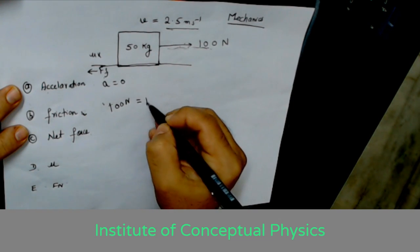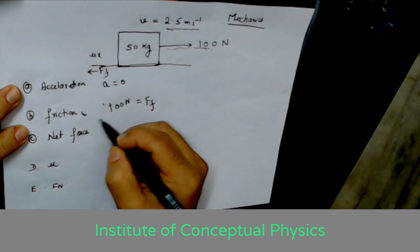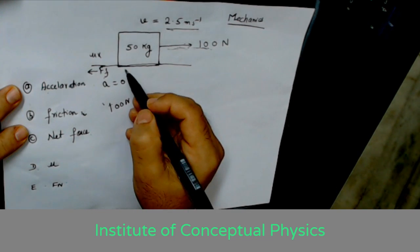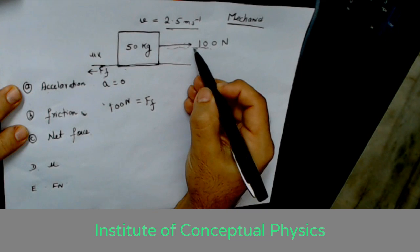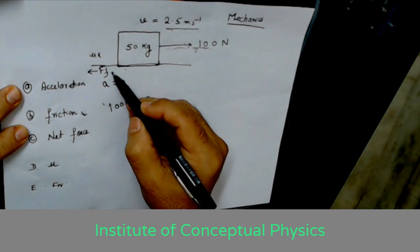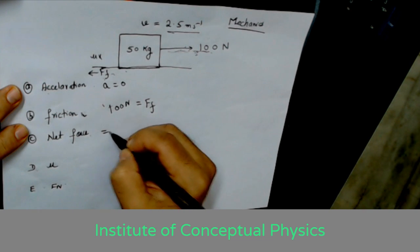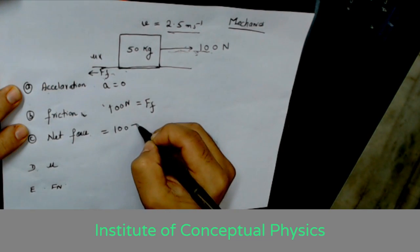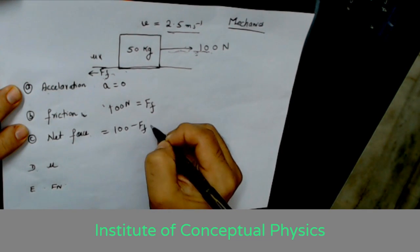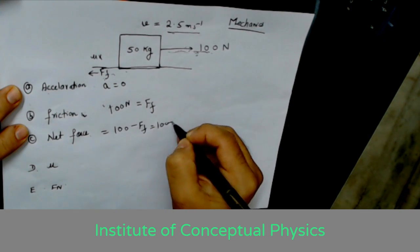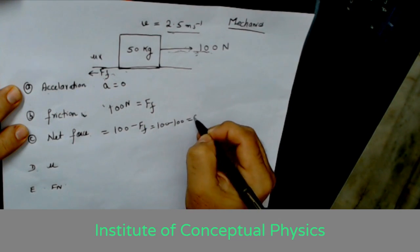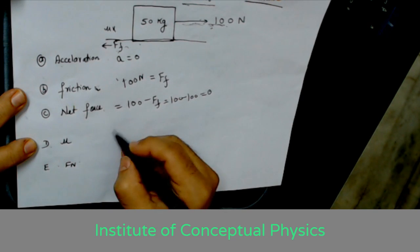The net force on the body is zero because it has been pulled on the right-hand side and there's a left frictional force. So the net force, the resultant of the pull force and the frictional force, is 100 minus 100 is equal to zero. You have to find the coefficient of friction.